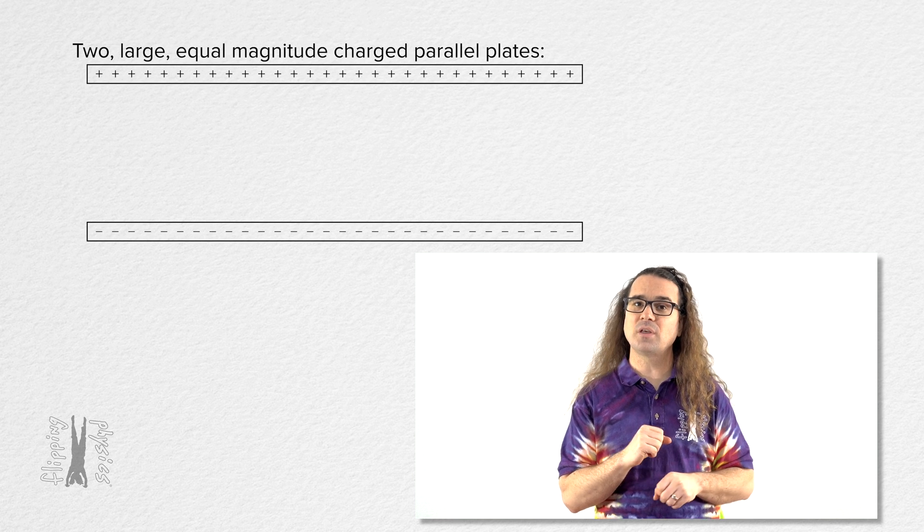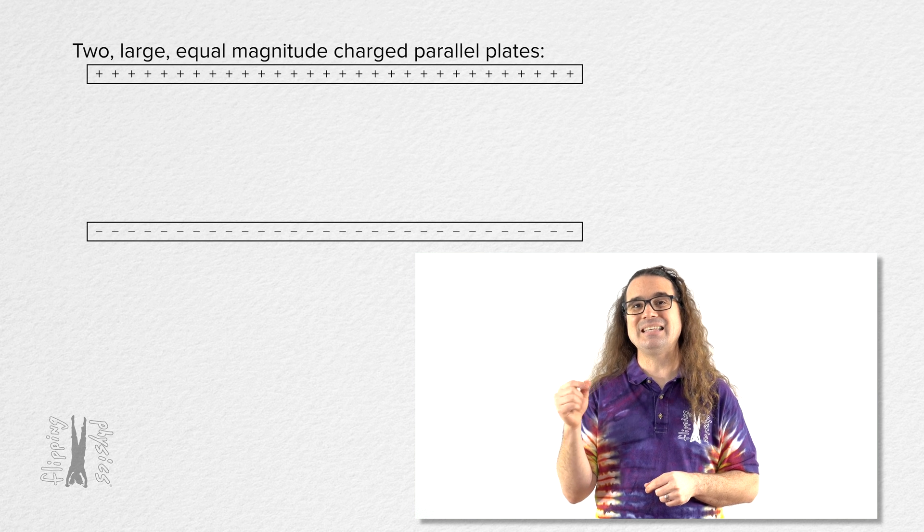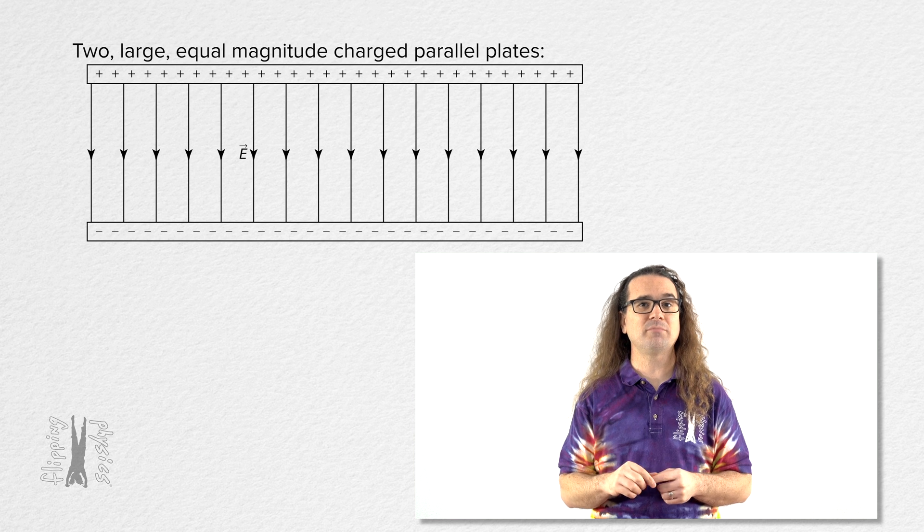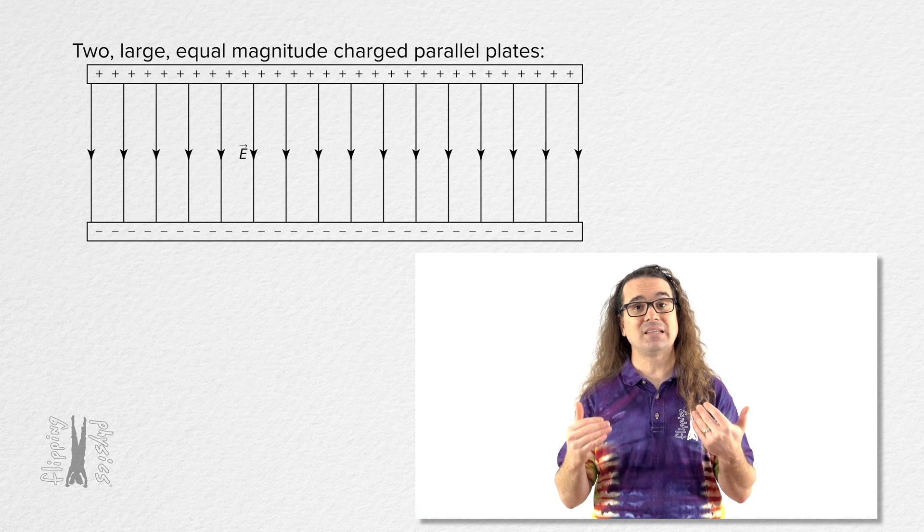In a previous lesson, we showed that the electric field between parallel plates is uniform and is directed from the positive plate to the negative plate, which is, in this example, directed downward.